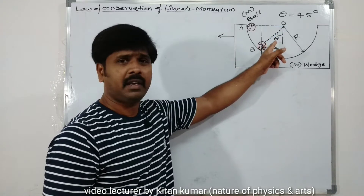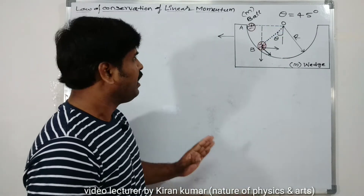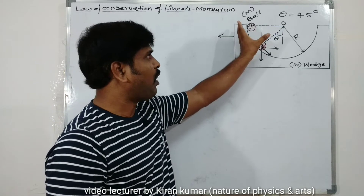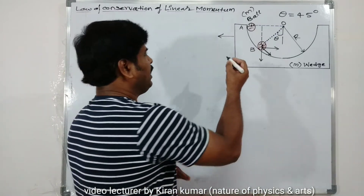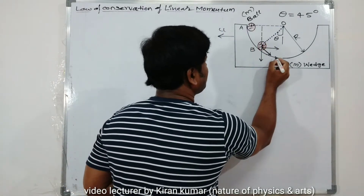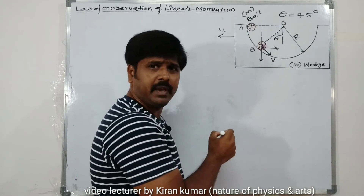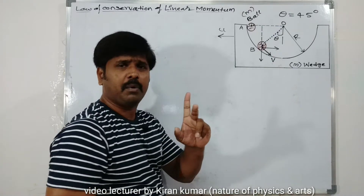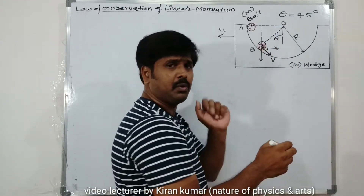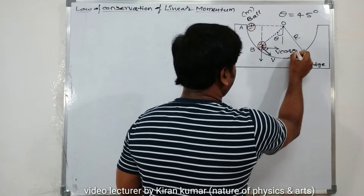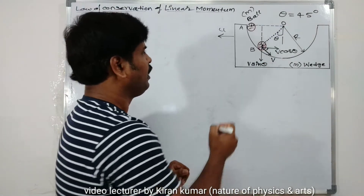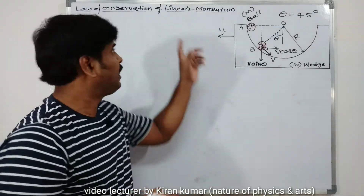Now I'll explain the law of conservation of linear momentum. When the ball is released inside the wedge, the wedge moves left with velocity u, and the ball moves downward with velocity v. The ball's velocity v is resolved into two components: v cos theta in the horizontal direction and v sin theta in the vertical direction.